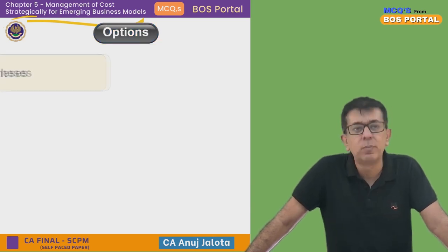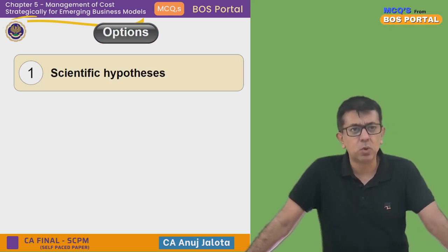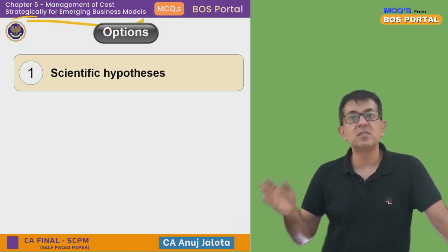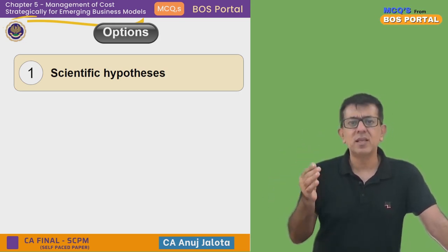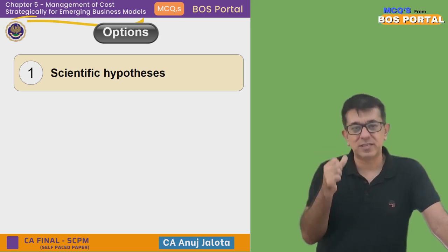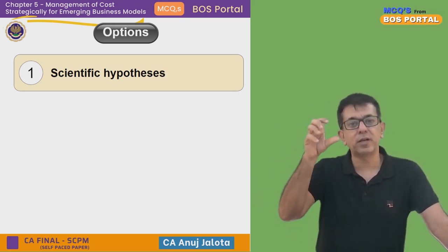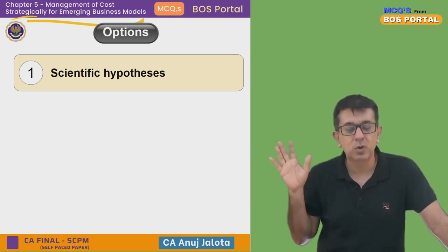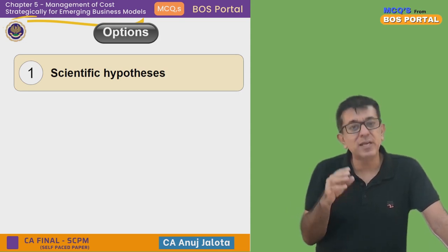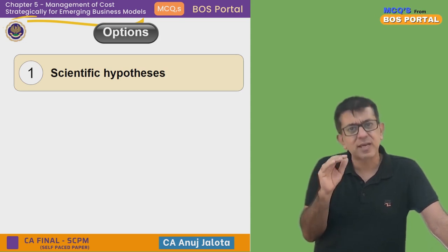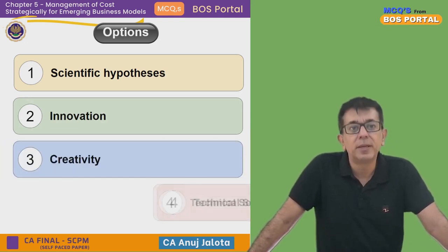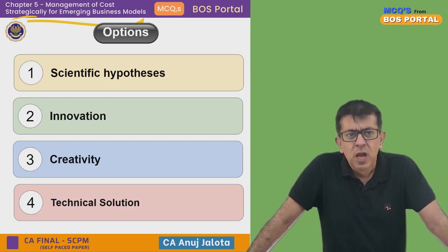The four options for the common core are: scientific hypothesis, innovation, creativity, and technical solution. Scientific hypothesis means they think something works and test it — like scientists searching planets with oxygen for life. If ten planets had oxygen but no life, the hypothesis may not hold. Innovation seems like the right answer.